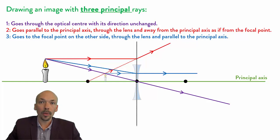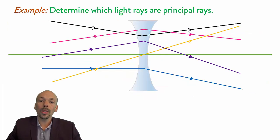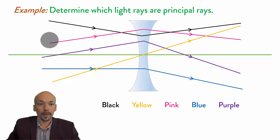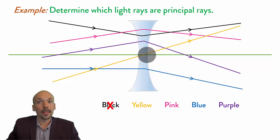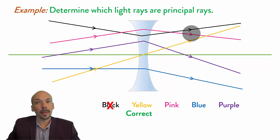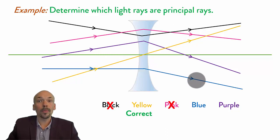There will now be three example questions to see if you understand. Determine which of these light rays are principal rays. The black one does not come in parallel and it doesn't go out parallel, and it also doesn't go through the optical center. So it's not a principal ray. The yellow one does go through the optical center and it's unchanged. So it is a principal ray. The pink one does not come in parallel and it doesn't go out parallel. So it's not a principal ray. The blue one is a principal ray — it comes in parallel and then goes from the principal axis. So it is a principal ray.